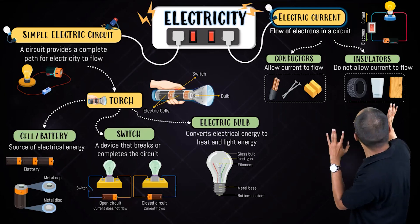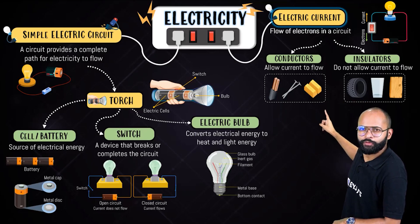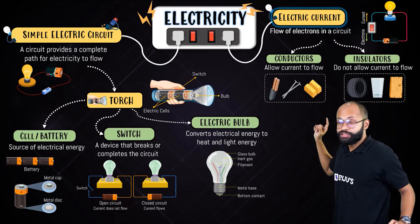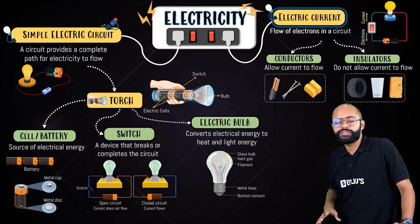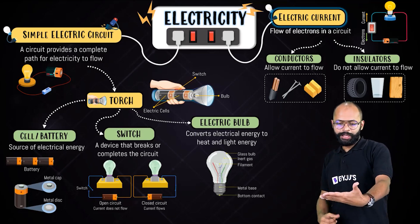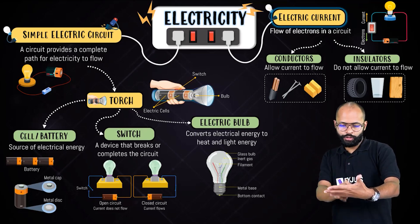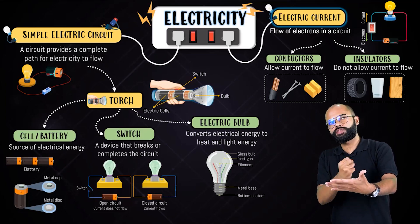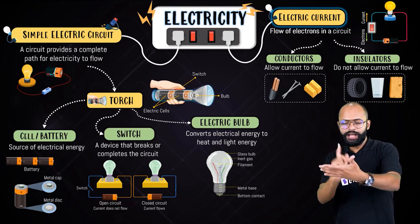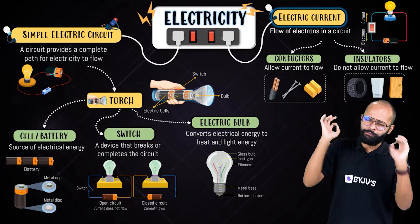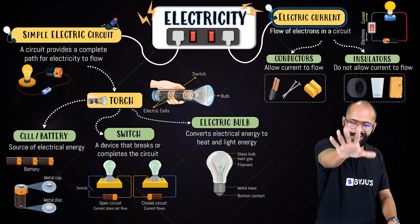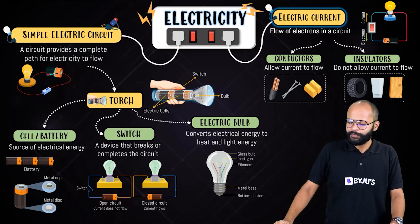Look at this whole mind map carefully. This is everything that is going to come from this chapter in your exams — apart from this, nothing else can come. I'll share this mind map with you on Telegram. Take a printout and review it once every few days. Revise: electricity → electric circuit → torch components (cell, switch, bulb) → electric current → conductors and insulators. Mind maps are very good for quick revision.